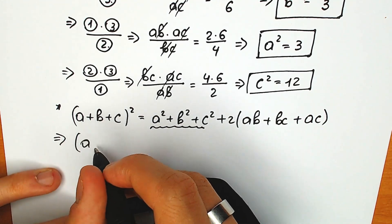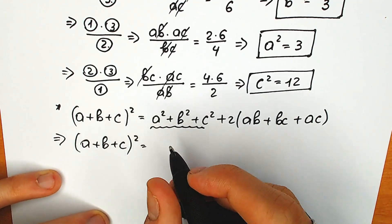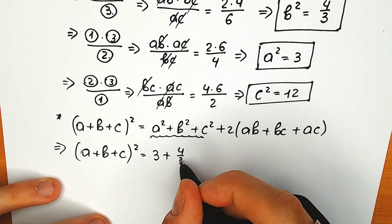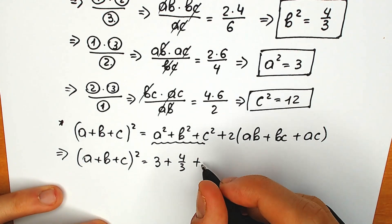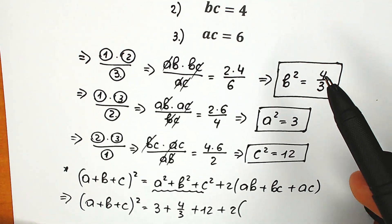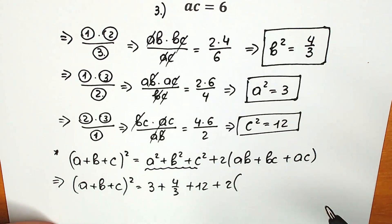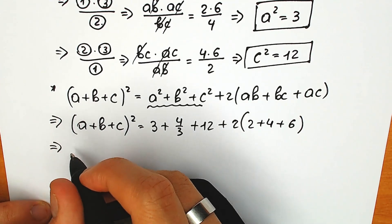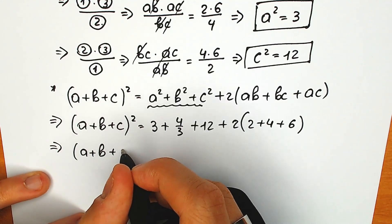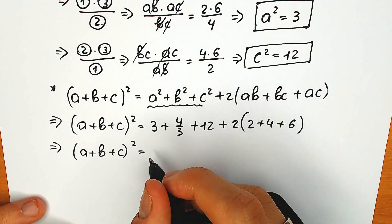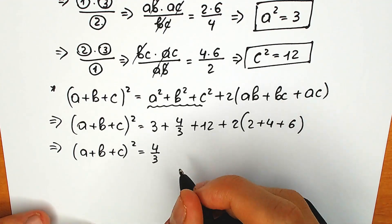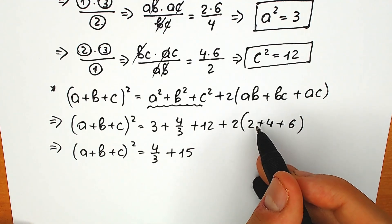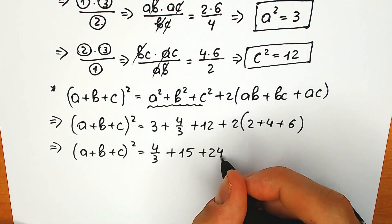Let's solve it step by step. a plus b plus c squared equals a squared, which is 3, plus b squared, which is 4 over 3, plus c squared, which is 12, plus 2 times the quantity ab plus bc plus ac, that is 2 plus 4 plus 6. So in the parentheses we have 12, times 2 gives us 24.